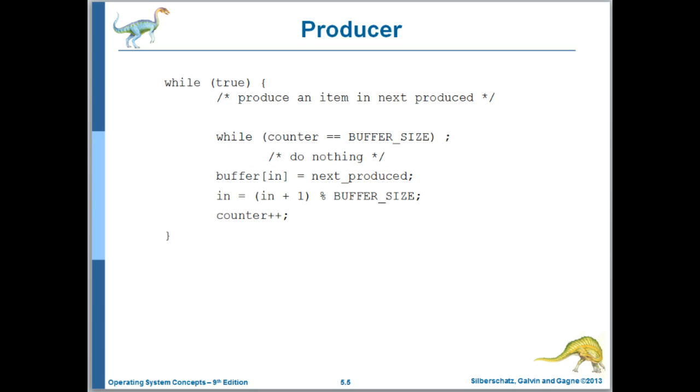So here we're looking at a solution, in quotes, to the producer-consumer problem in which we're using all the buffers. So here's the logical code for the producer, where the producer can keep producing so long as there is an empty buffer. And the way that the producer checks to see if there's an empty buffer is with that while condition there. So if counter, which is counting the number of full buffers, is equal to buffer size, which is the number of buffers, then the producer should spin.